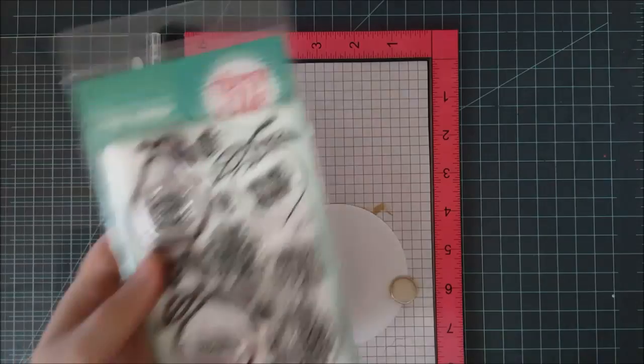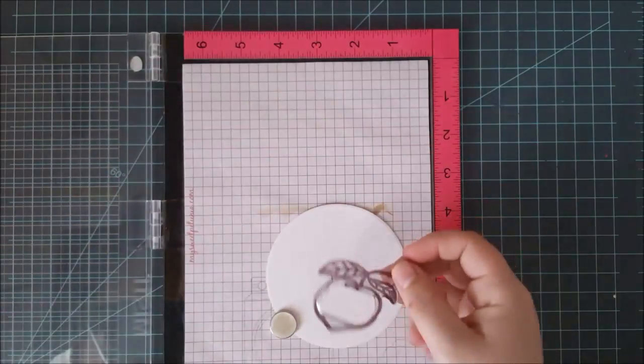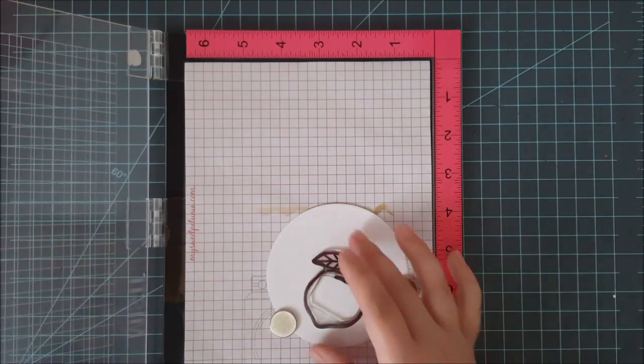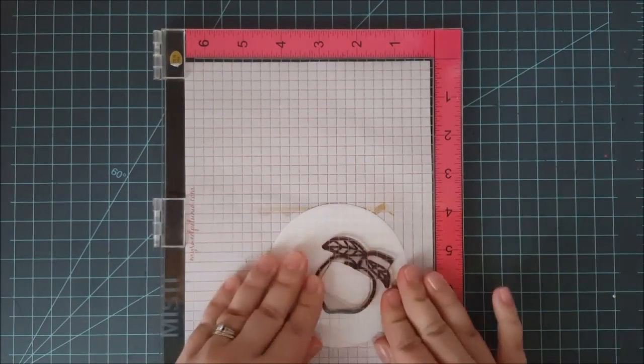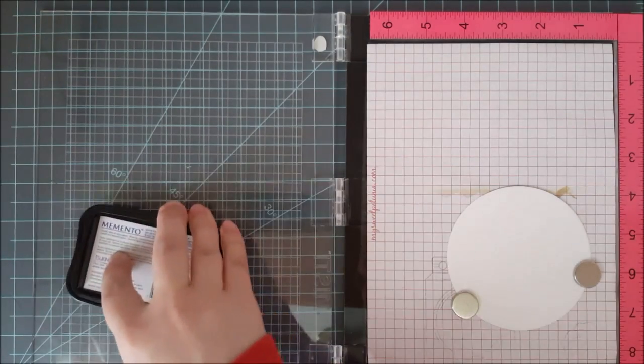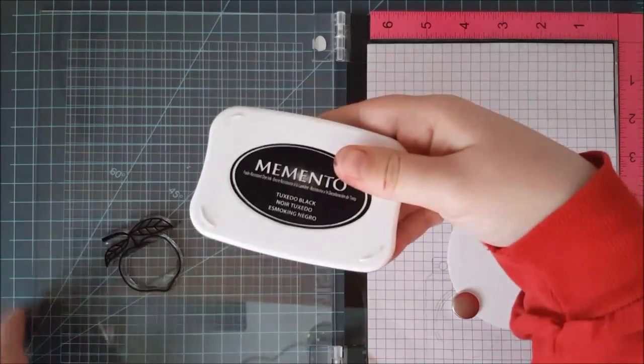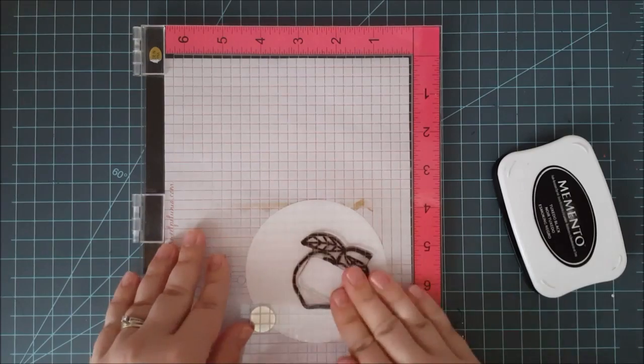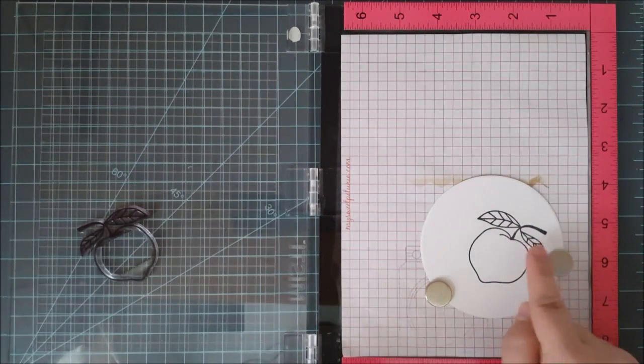I'm taking one of those circles and putting it in my MISTI and pulling out this Avery Elle Berry Good stamp set. I'm going to be using the peach image today. I'll line that up on my cardstock, one kind of off center to the right. I'll stamp this one first. I'll ink it up with some Memento Tuxedo Black ink. I'll be using alcohol markers today. If you want to use a different coloring medium, just make sure that your ink coordinates with whatever medium you're using.